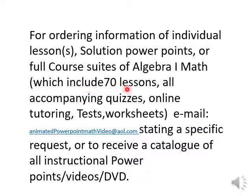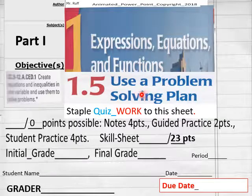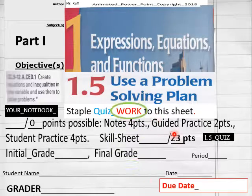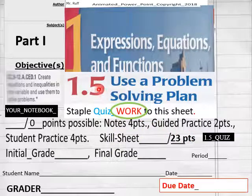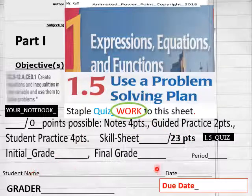Hello everybody, getting ready to do lesson 1.5 quiz today for Algebra 1 math. On your quiz sheet you've got 23 points. Students, have that out in front of you now. Put your name, date, and period here.